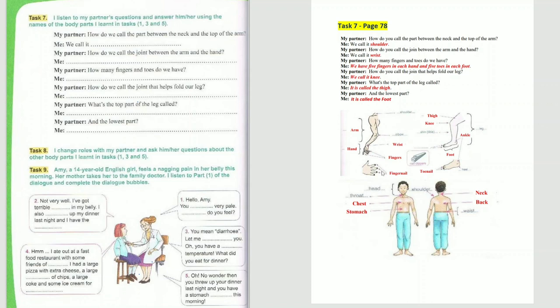We have 5 fingers in each hand and 5 toes in each foot. How do you call the join that helps fold our leg? We call it knee. What's the top part of the leg called? It is called the thigh. And the lowest part? It is called the foot. Thank you.